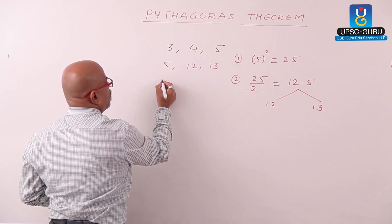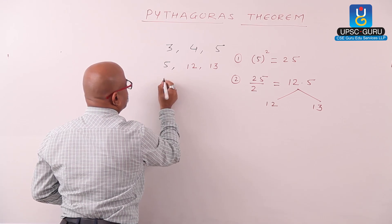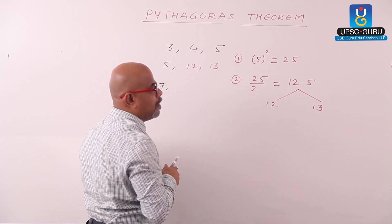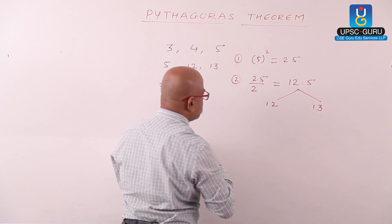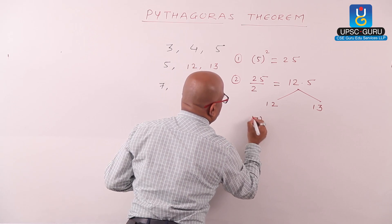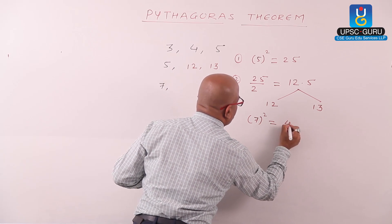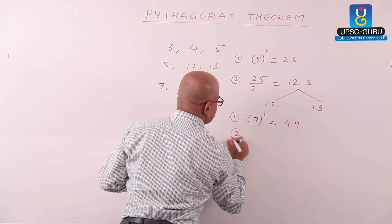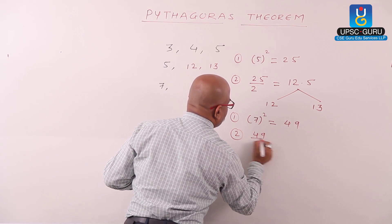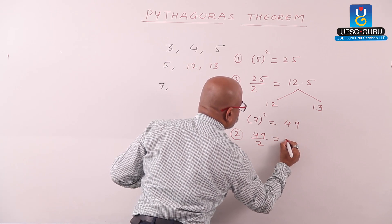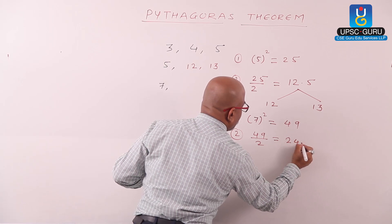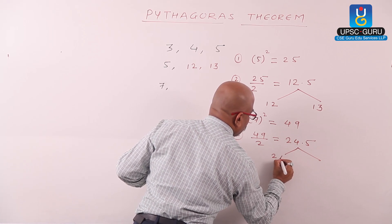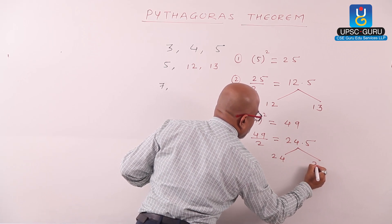One more odd number after 5 is 7. Again follow the same steps. First step: 7 squared gives us 49. Second step: 49 divided by 2.